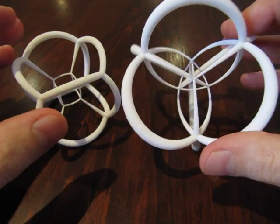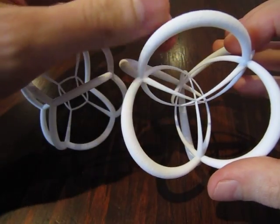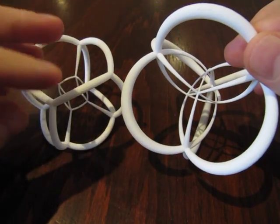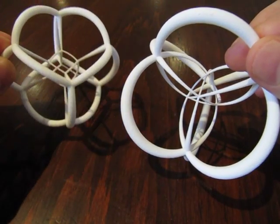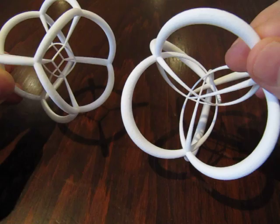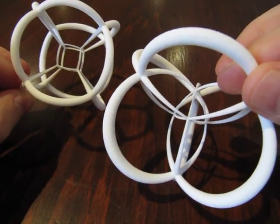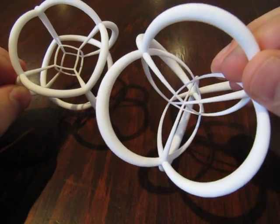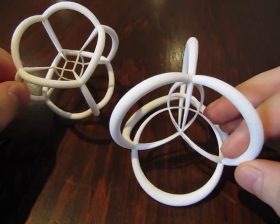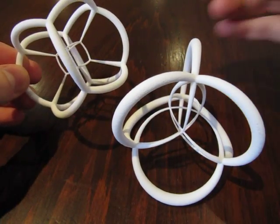For both of these, the edges live in four-dimensional space. You can think of projecting those edges onto the surface of a three-dimensional sphere, and then projecting once more down into our usual three-dimensional Euclidean space using stereographic projection.